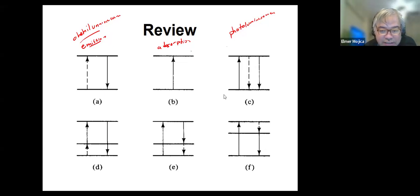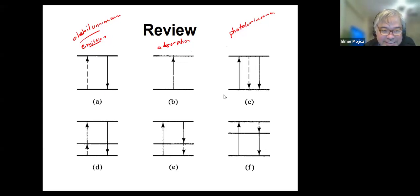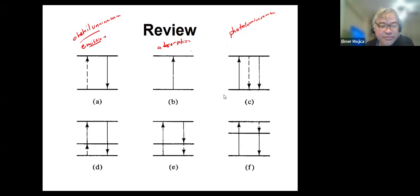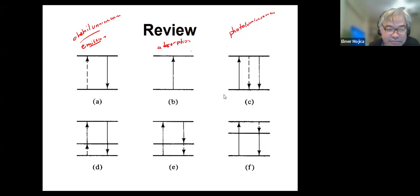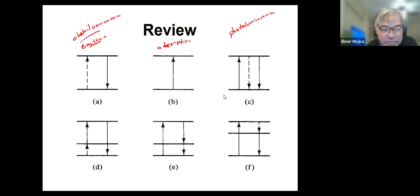If you're going to look at D and E, the excitation and deactivation can involve both radiative and non-radiative transitions in which the wavelength of emitted photons can be less or greater.